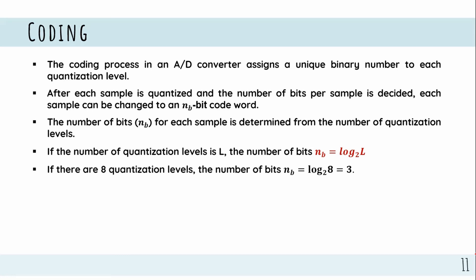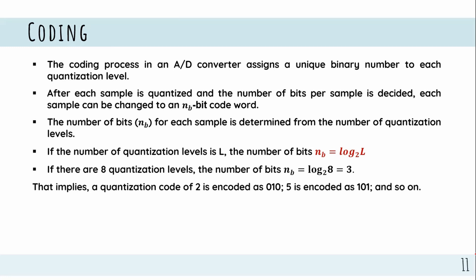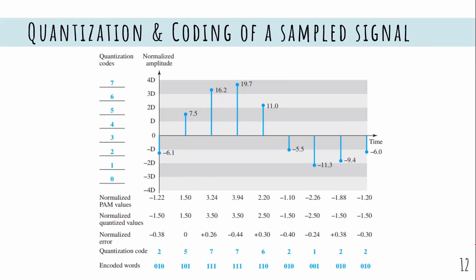The number of quantization levels equals 2 to the power of n bits. For example, if you have 2 bits, you can express values from 0 to 3. If you have a sample signal, it will be represented as a quantized coding signal.